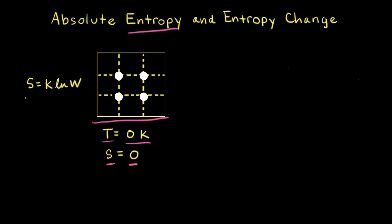We can think about why the entropy is equal to zero by looking at the equation developed by Boltzmann that relates entropy S to number of microstates W. A microstate refers to a microscopic arrangement of all of the positions and energies of all of the particles. For our pure crystalline substance at absolute zero, all of the particles are perfectly ordered in their lattice states with no thermal motion. That means there's only one possible arrangement, and therefore only one microstate.